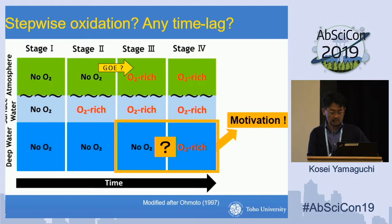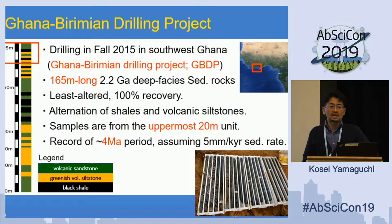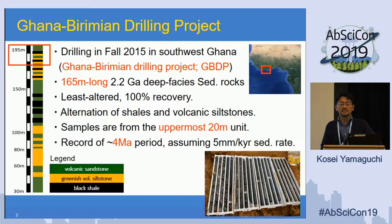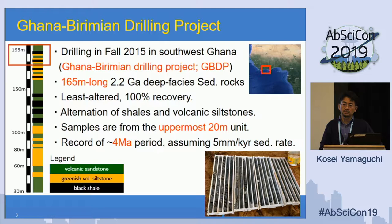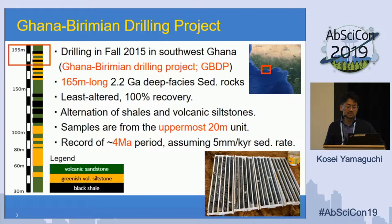I looked at geological maps to search for deep samples throughout the world, and I found a Greenstone Belt in Ghana whose age is about 2.2 GA. About 10 years ago, I first went to Ghana to do preliminary field work, and I realized this was a perfect place to obtain deep facies samples from the 2.2 GA period. Luckily, I obtained funding to realize this continental drilling in Ghana, which happened in the fall of 2015 in southwest Ghana. We obtained 160-meter-long 2.2 GA deep facies sedimentary rocks.